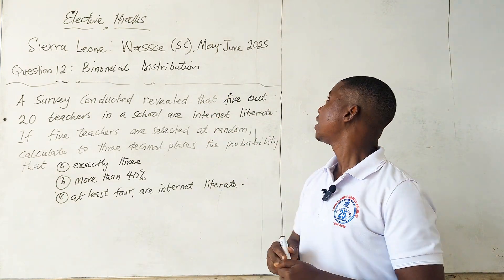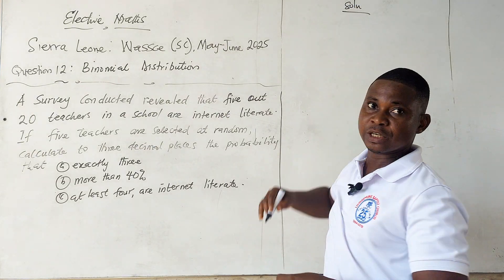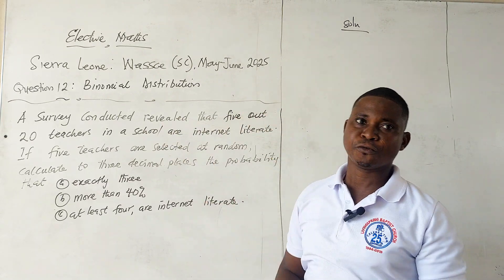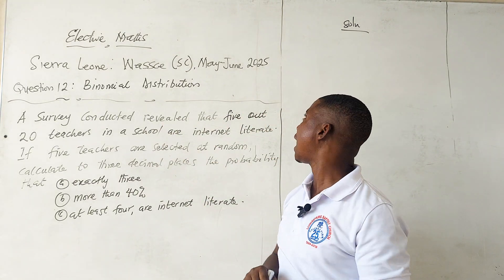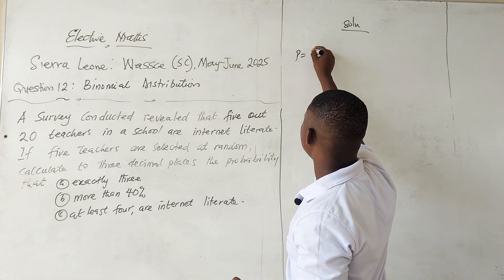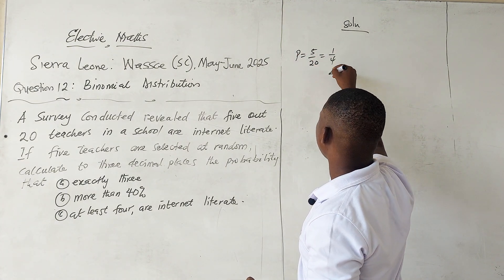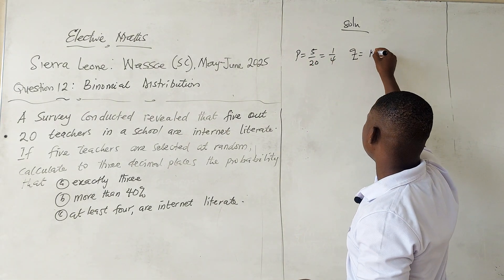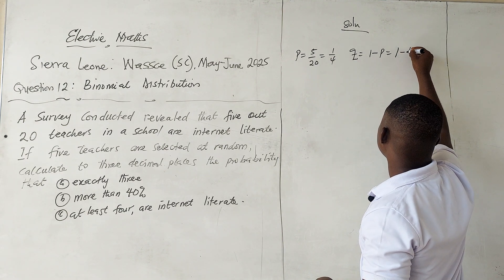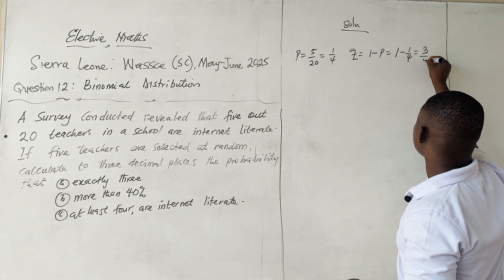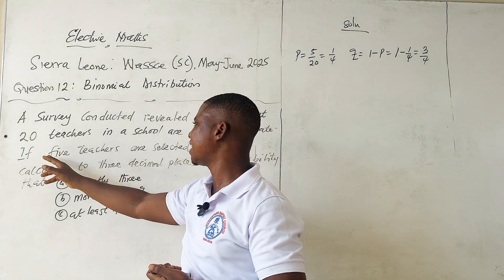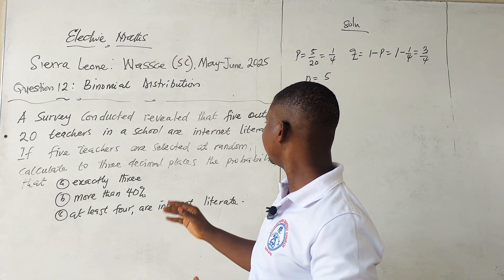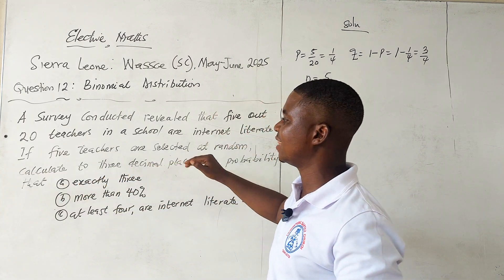This question is on binomial distribution. Under binomial distribution we talk about success and failure. From the question, five out of 20 teachers are internet literates, so p = 5/20 = 1/4. Then q = 1 - p = 1 - 1/4 = 3/4. From the question, five teachers are selected at random, so n = 5.